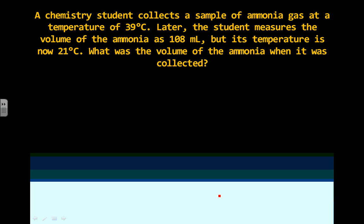All right, let's do one more problem. That was easy enough. A chemistry student collects a sample of ammonia gas at a temperature of 39 degrees Celsius. So as I'm reading here, I'm just marking some key words that are going to tell me what to do. Later, this is indicating some sort of change. The student measures the volume of the ammonia as 108 milliliters, but its temperature is now 21 degrees Celsius. Another change there. What was the volume of the ammonia when it was collected? So this is asking for V1, initial volume.